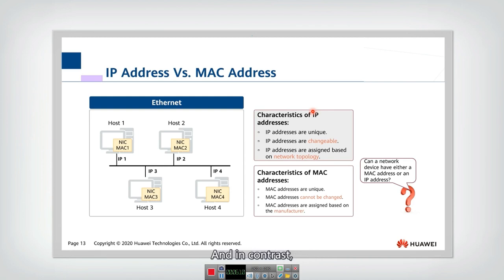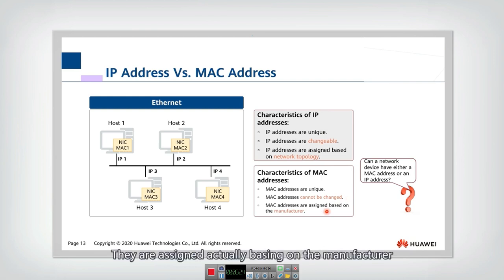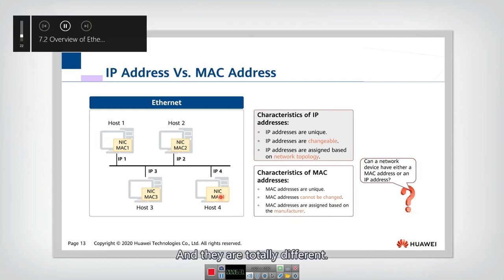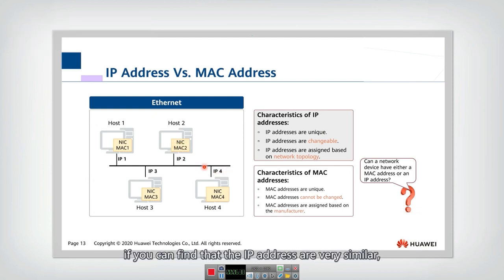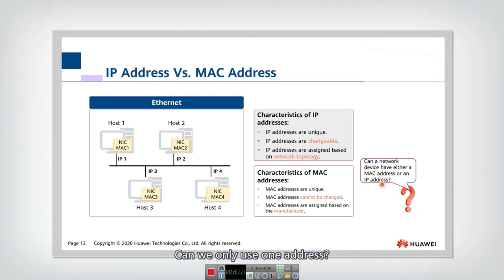In contrast, the MAC address cannot be changed — it is fixed from birth, like your ID number. MAC addresses are assigned based on the manufacturer and are totally different from each other. Within one network, IP addresses are very similar with the same first part, but MAC addresses can all be completely different across all 48 bits. The IP address is based on network topology.